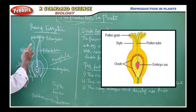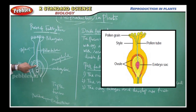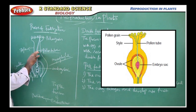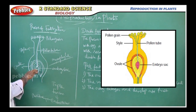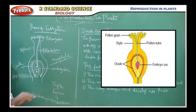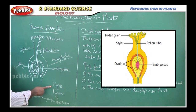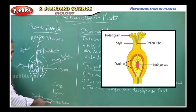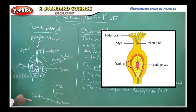First the pollen grain extends its pollen tube and fuses with the nucleus. Then the sperm of the pollen grain fuses with the secondary nucleus. The secondary nucleus is then fused by another male gamete, and this is considered as triple fusion. This triple fusion forms an endosperm layer, which is the nutritive substance for the development of the embryo.